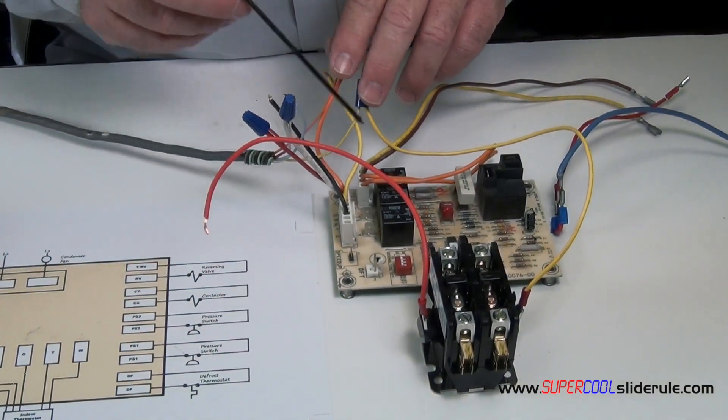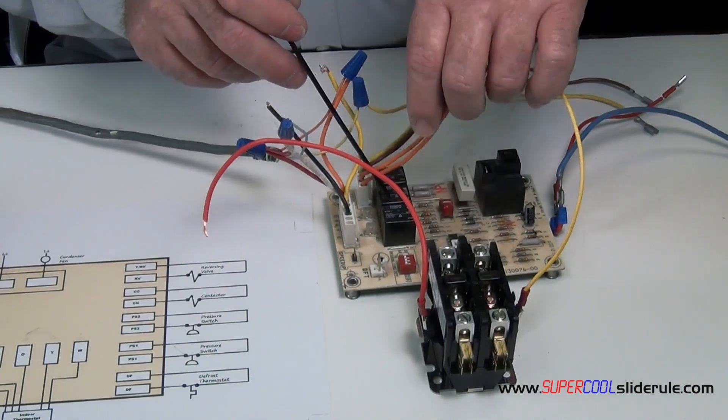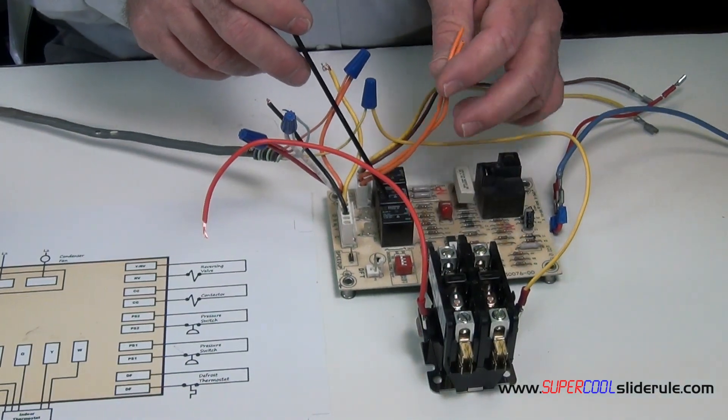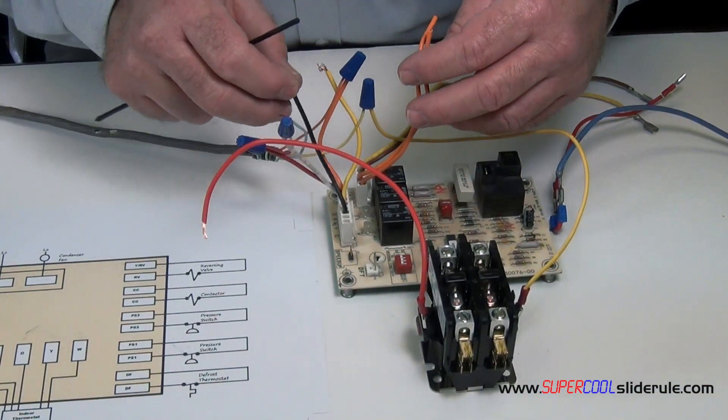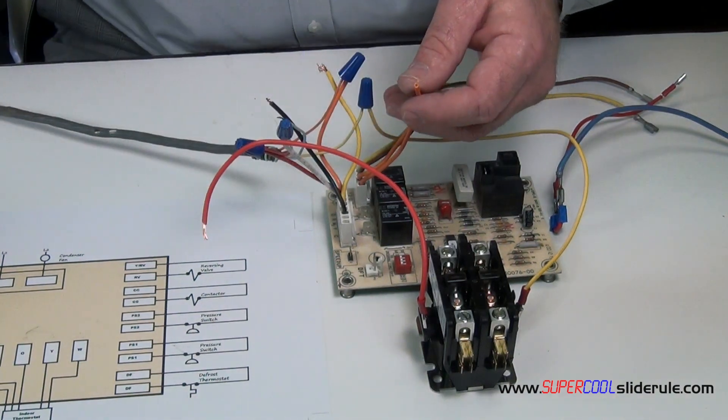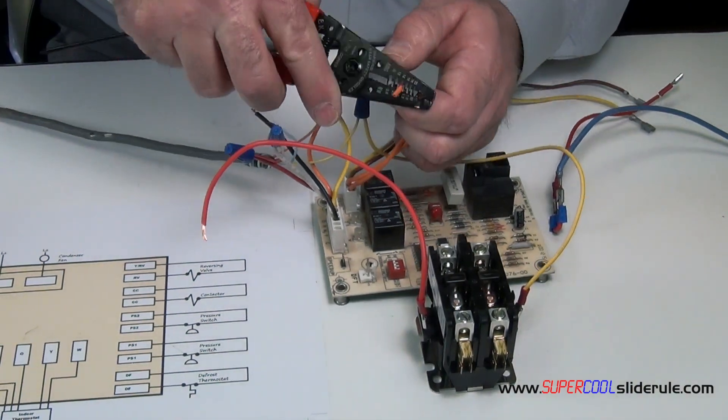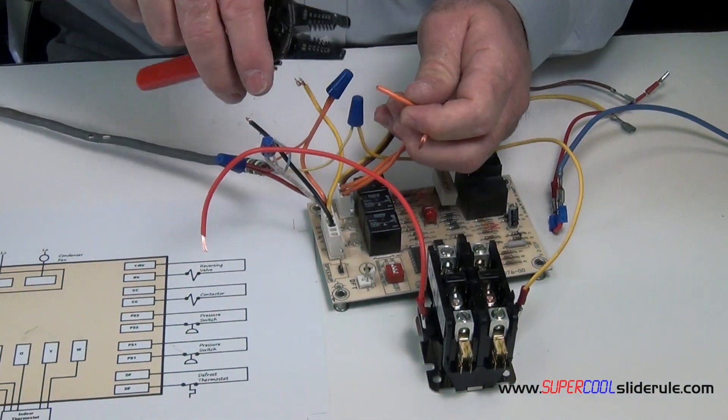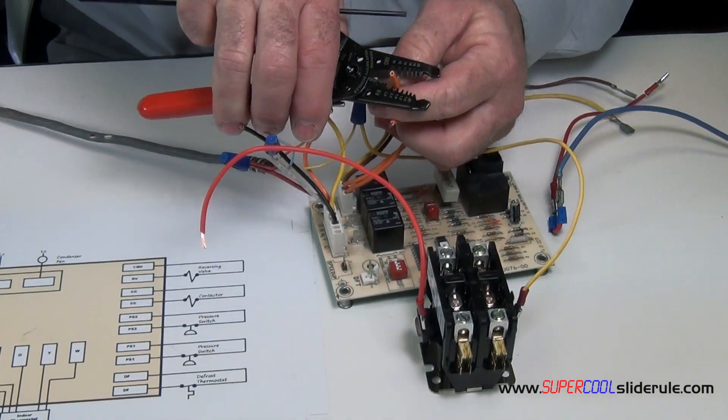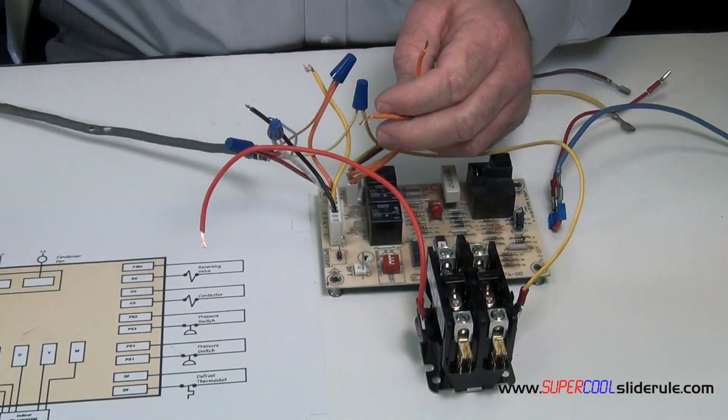The two reversing valve wires are located here, these two orange wires. These will also need to connect to your common. So what we're going to do is you can cut those anywhere. We'll tie them back together later on.